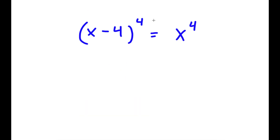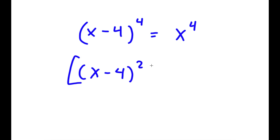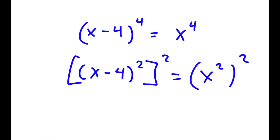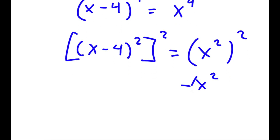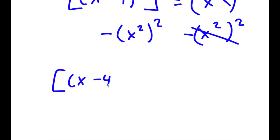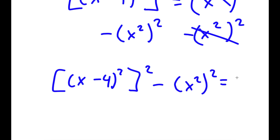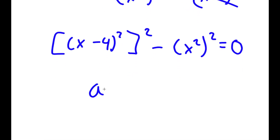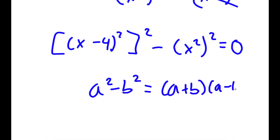In this problem, I have (x minus 4) to the power of 4 is equal to x to the power of 4. I'm going to rewrite this as (x minus 4) squared to the power of 2 is equal to x squared to the power of 2. Now I'm going to subtract x squared to the power of 2 from both sides, giving me (x minus 4) squared to the power of 2 minus x squared to the power of 2 is equal to 0. Using the difference of squares: a squared minus b squared equals (a plus b)(a minus b).